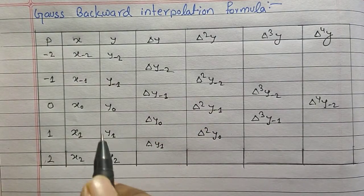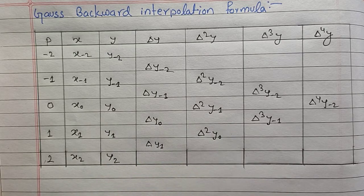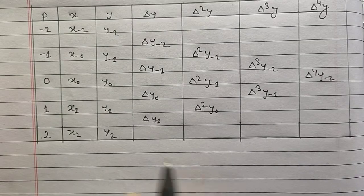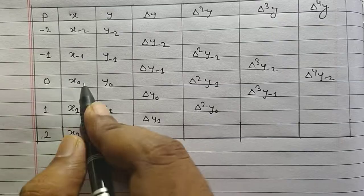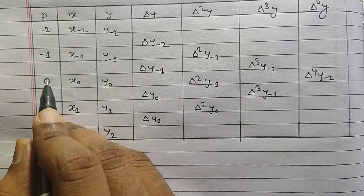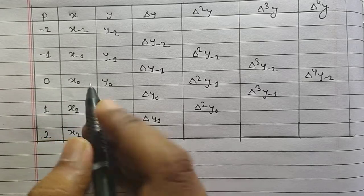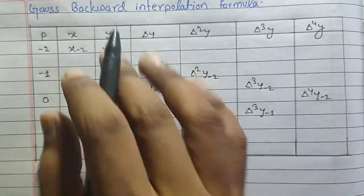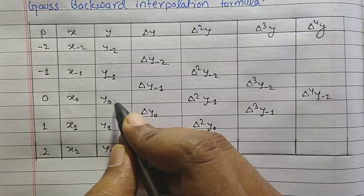So let's move toward the Gauss backward interpolation formula. This was the table, now let's move toward the formula. x₀ represents our starting point — we start the numerical from x₀. Our method is the backward method, so from y₀ we will move backward.